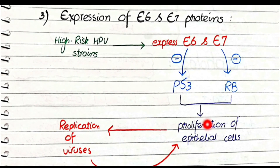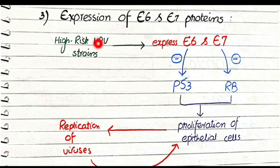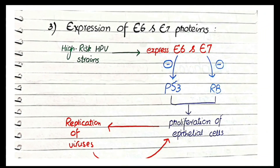There is active proliferation of squamous epithelial cells of the transformation zone. Normally these cells do not proliferate at a very high pace, but cells infected with HPV start to proliferate very rapidly. When a virally infected cell proliferates at a high rate, it results in faster replication of viruses — this is HPV's strategy of using the host cell machinery of the transformation zone to replicate itself faster.